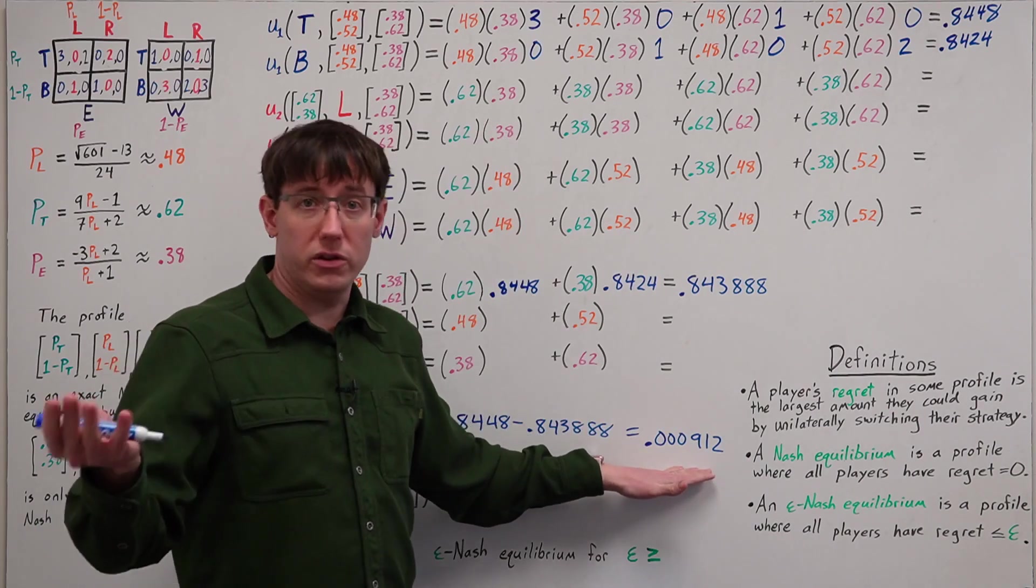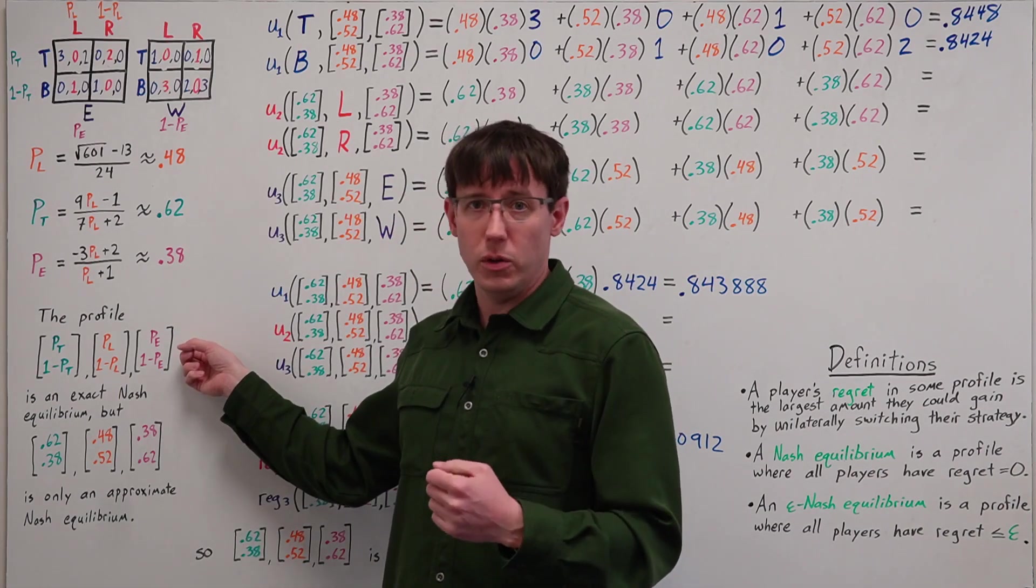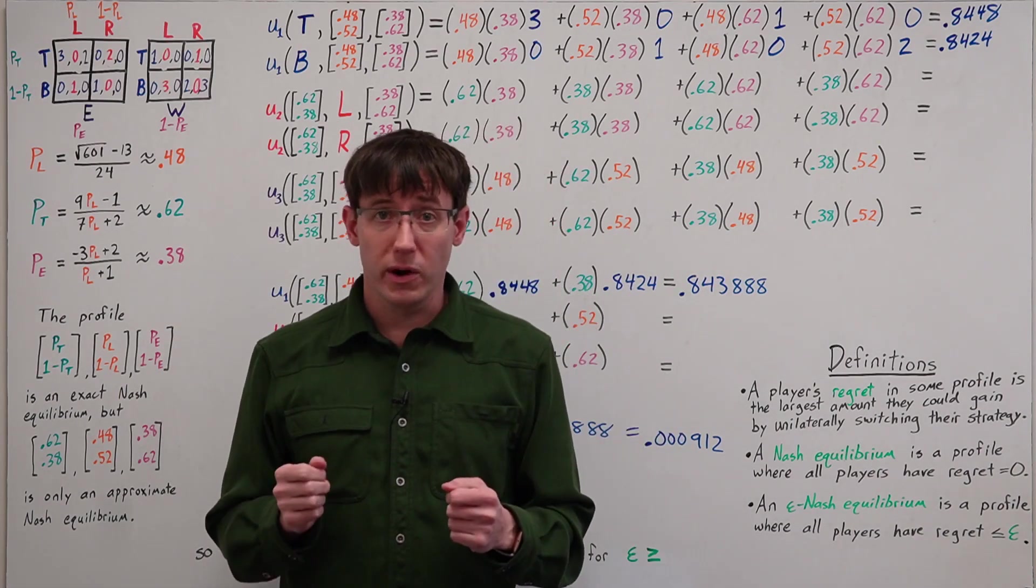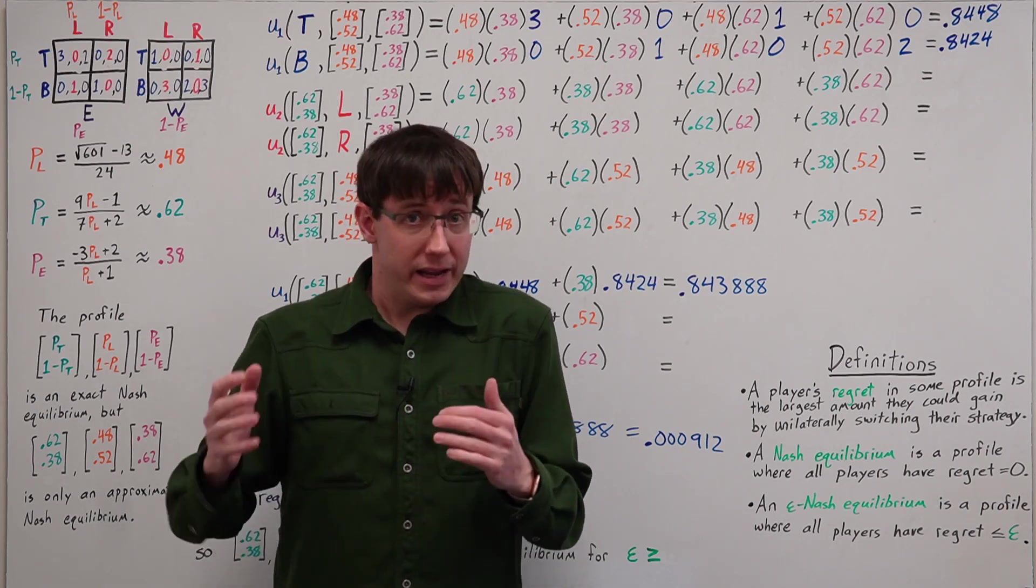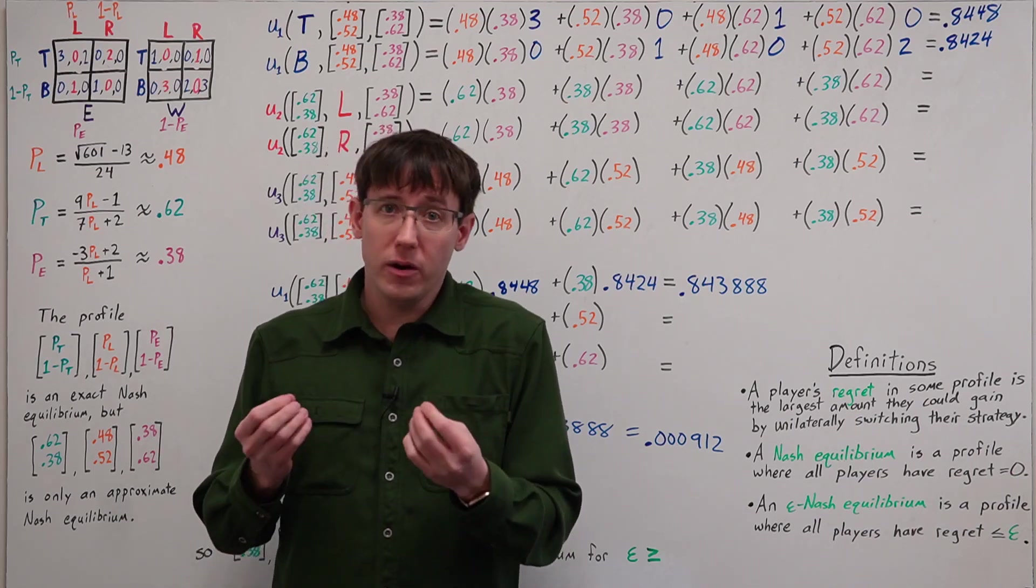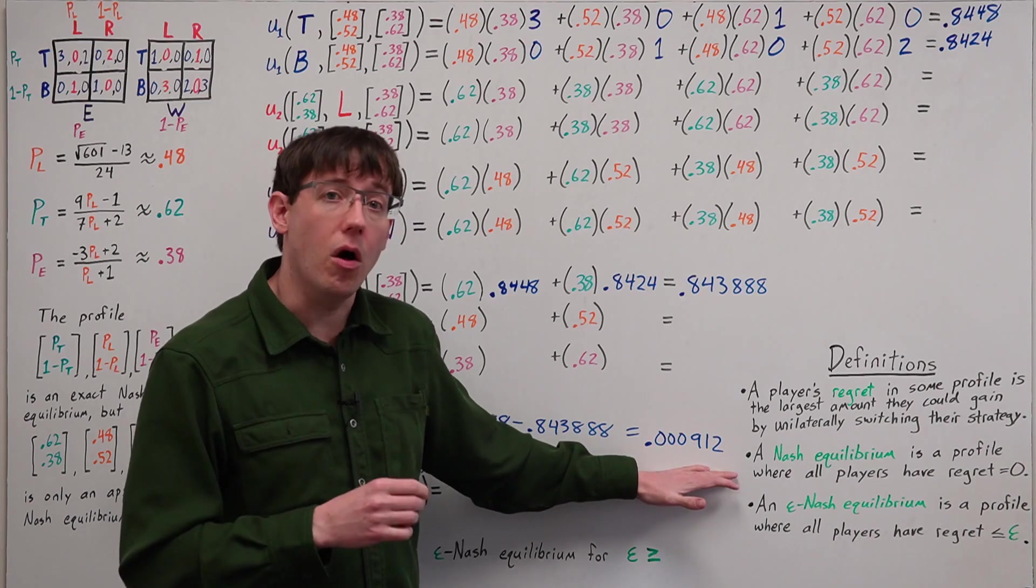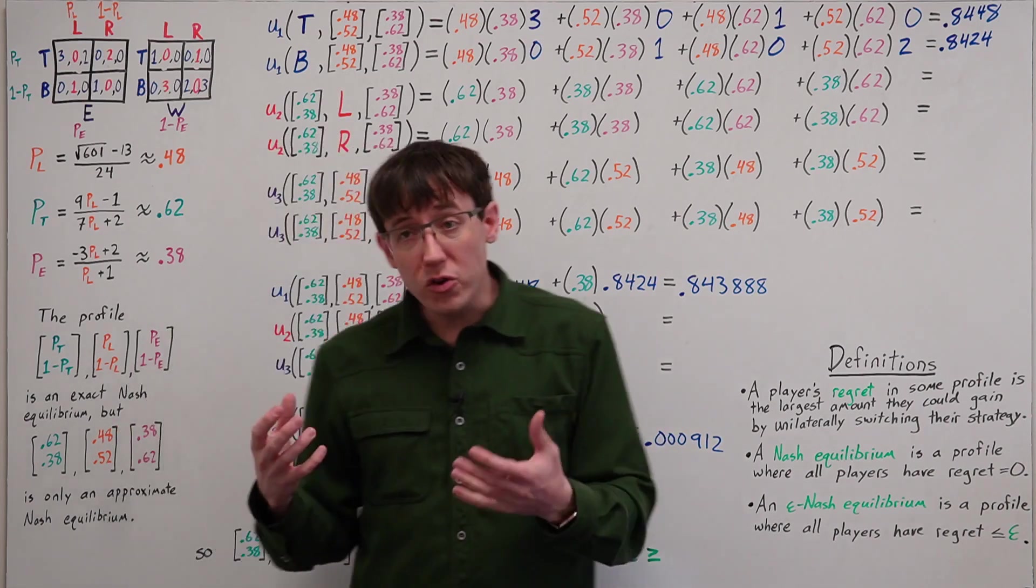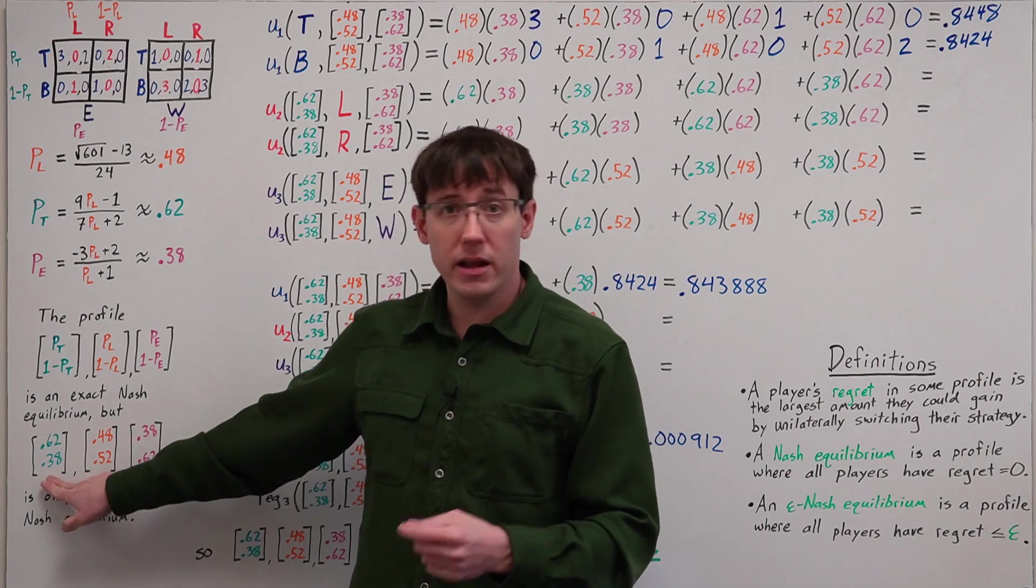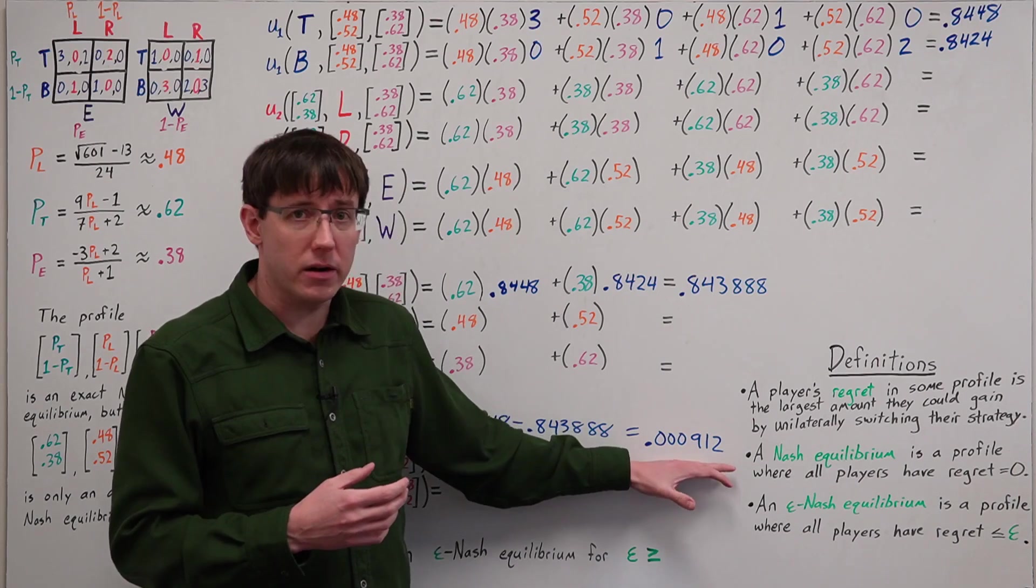So this value is player one's regret. So in the exact Nash equilibrium, player one would have a regret of zero, because there's no way to gain by deviating. But here, player one's regret is non-zero, but quite small. And so, while player one could do better than playing their part in this profile, they really can't do much better. And so their incentive to deviate away from our approximate equilibrium is very small.